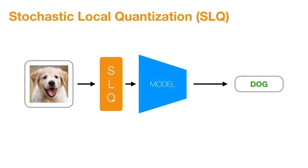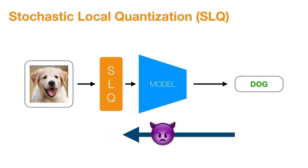In this work, we introduce a novel preprocessing technique called stochastic local quantum democratization, or SLQ, into the classification pipeline. SLQ is a randomized process, and is non-differentiable by design, which denies the access to a useful gradient to the attacker.